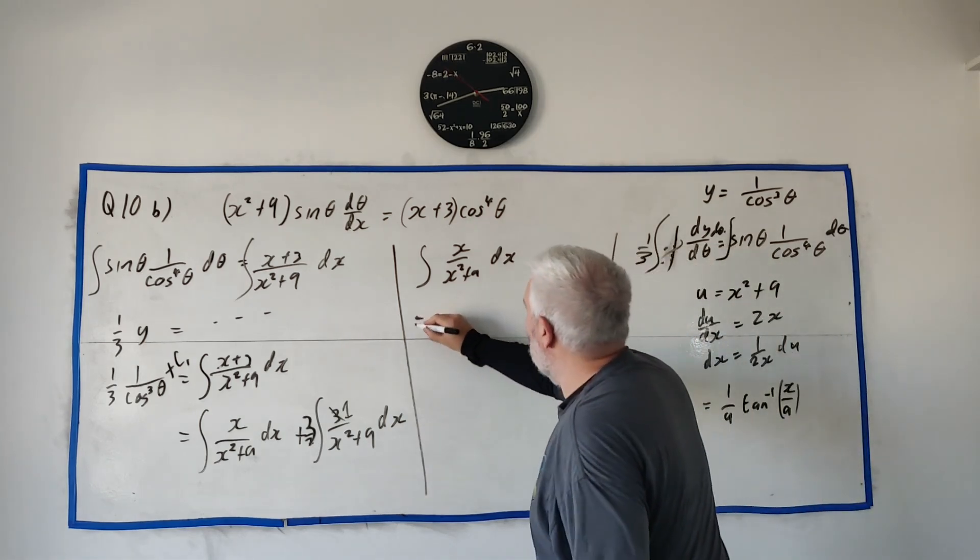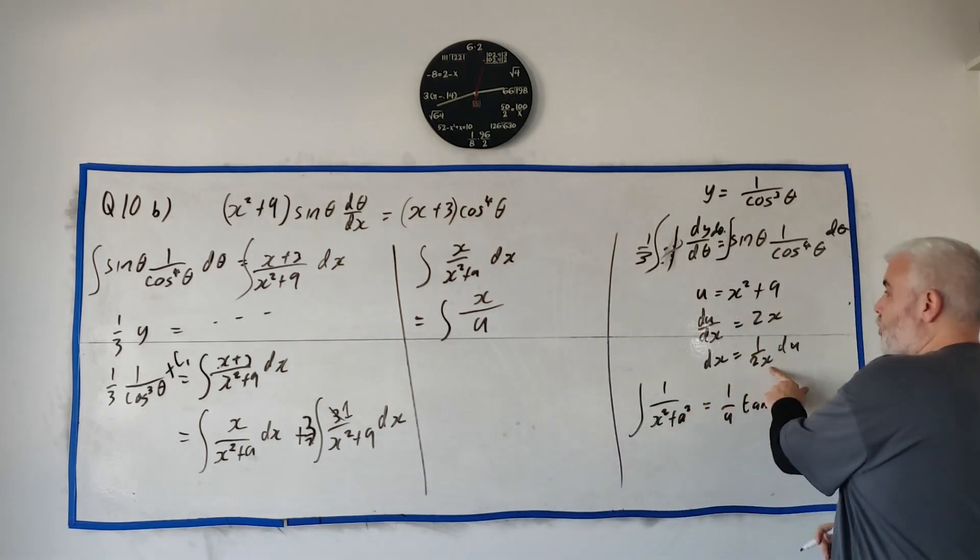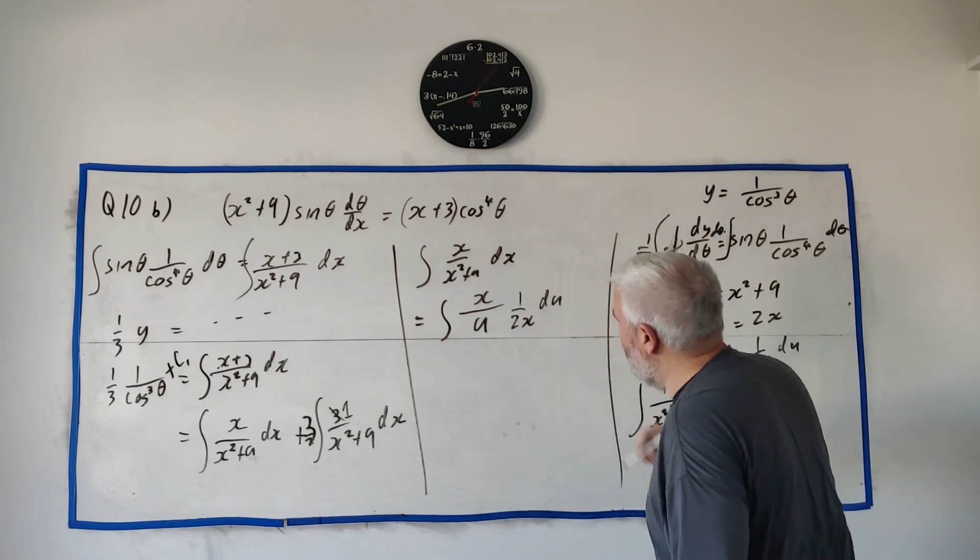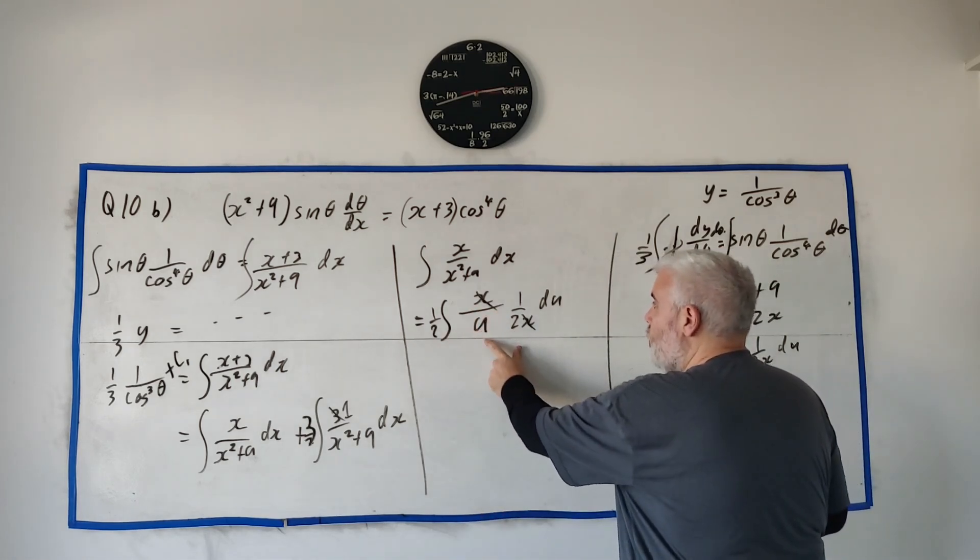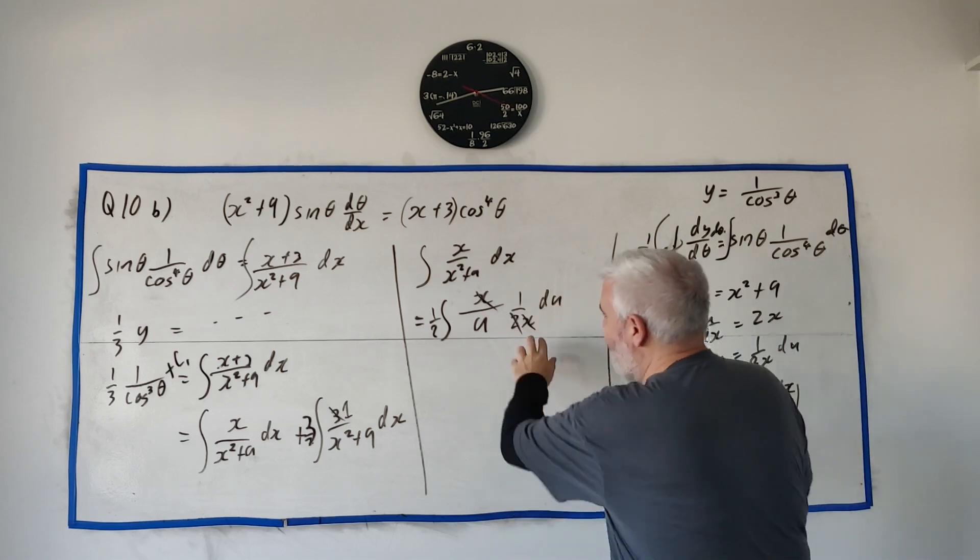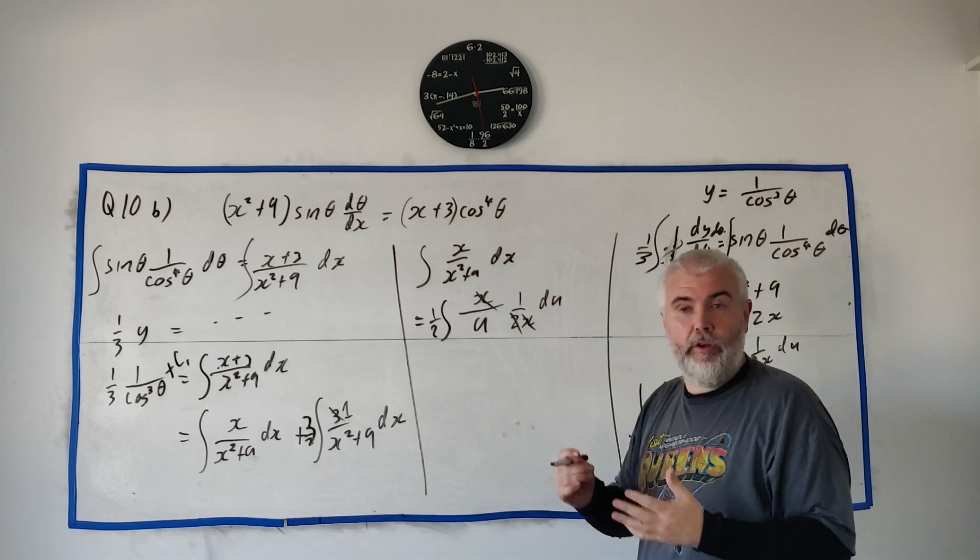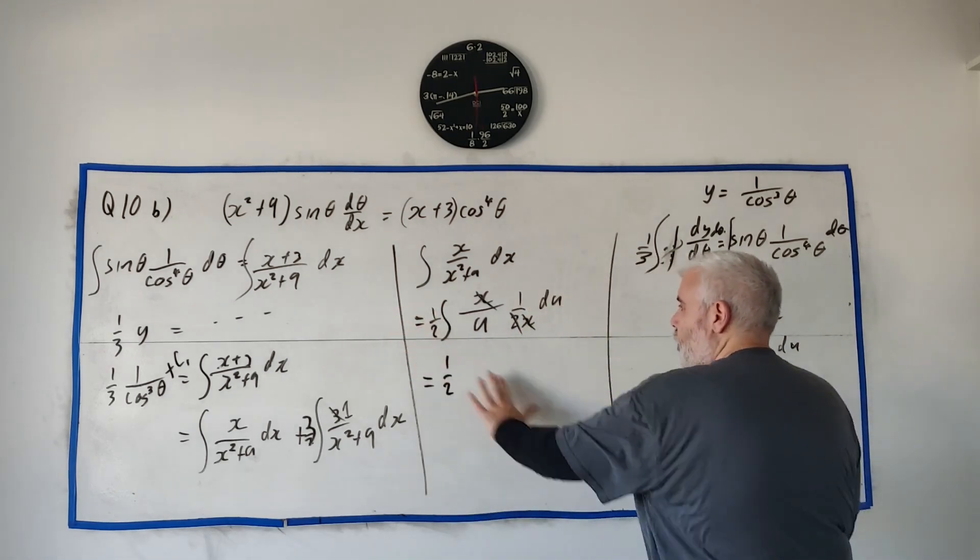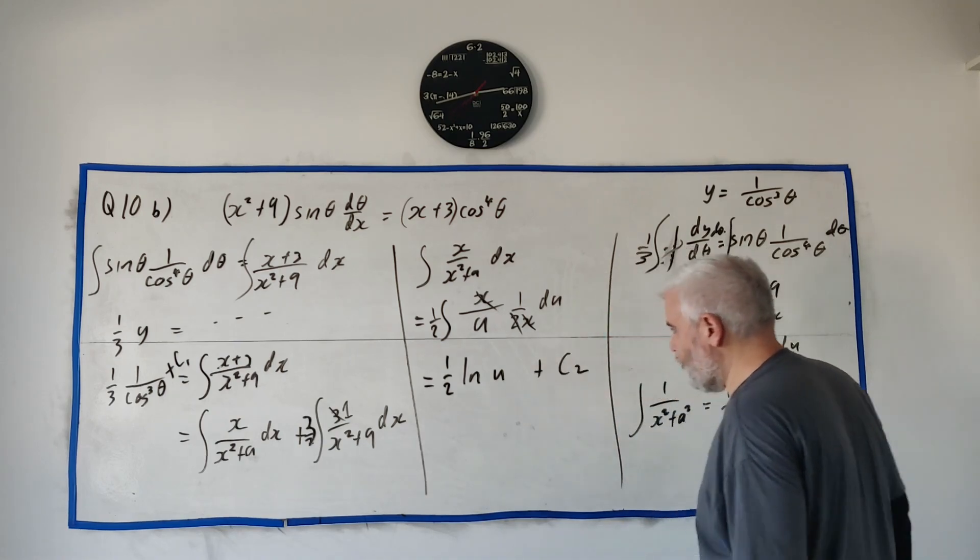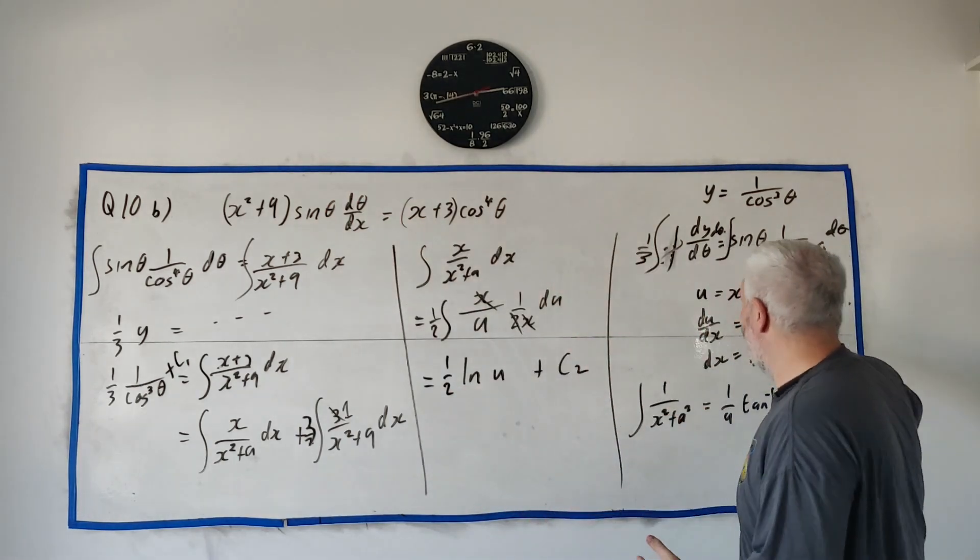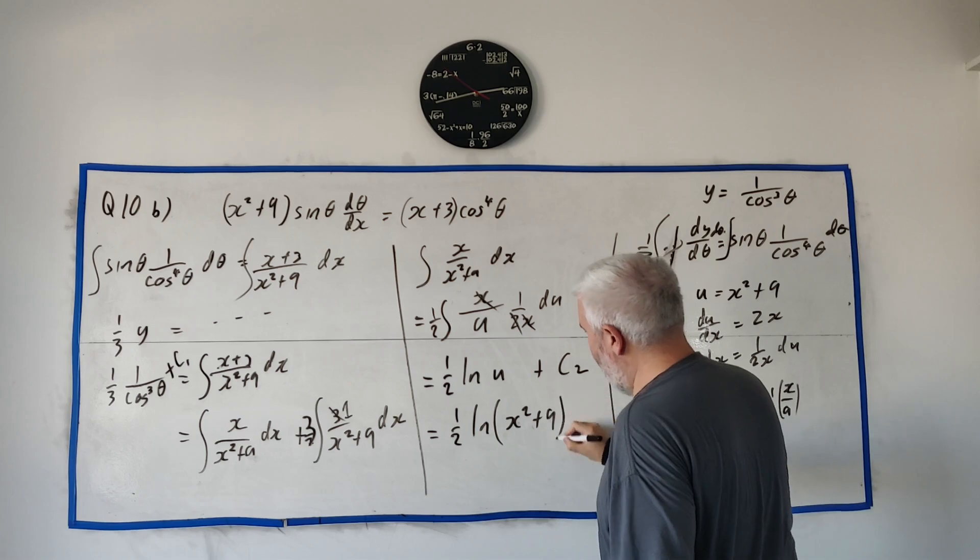This equals x on top, bottom row becomes u, dx turns into 1 over 2x du. The x's cancel, the 2 comes out front to be a half. We're left with the integral of 1 over u du. The integral of 1 over something comes out as natural log of the something, or natural log u in this case, plus some constant c2. There's no u's in our question, so we rewrite this as a half natural log of x squared plus 9 plus c2.